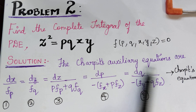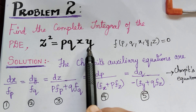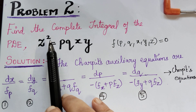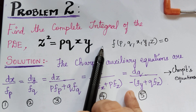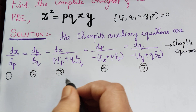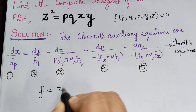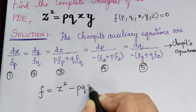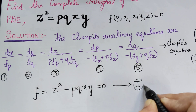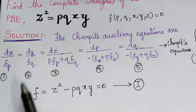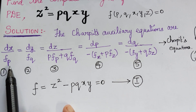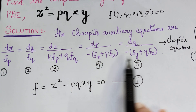In order to find this equation, first of all we shall consider the given partial differential equation as f. When we bring p, q, x, y to the other side we get z² − pqxy = 0, which is marked as equation 1. Using this we can find fp, fq, fx, fz, and fy.